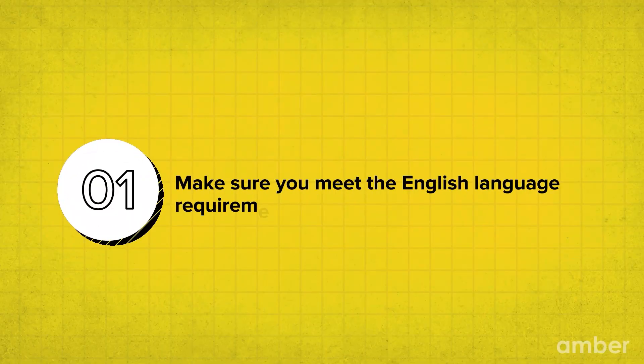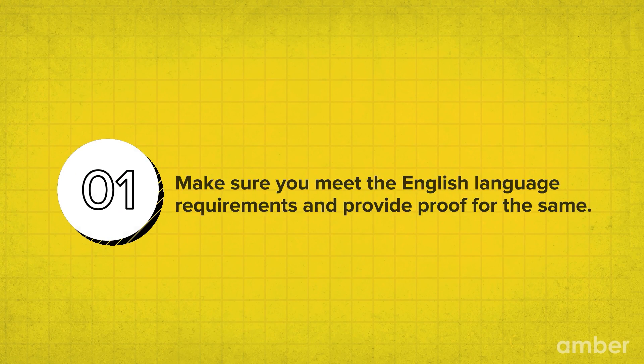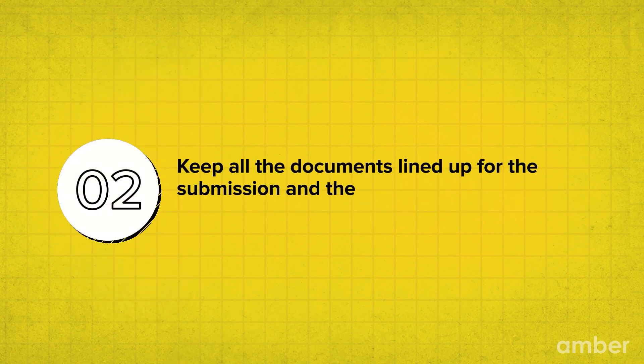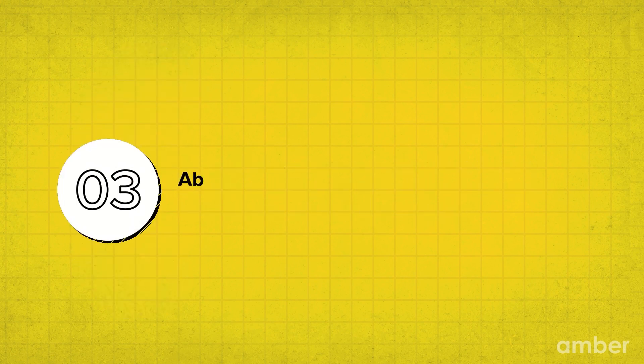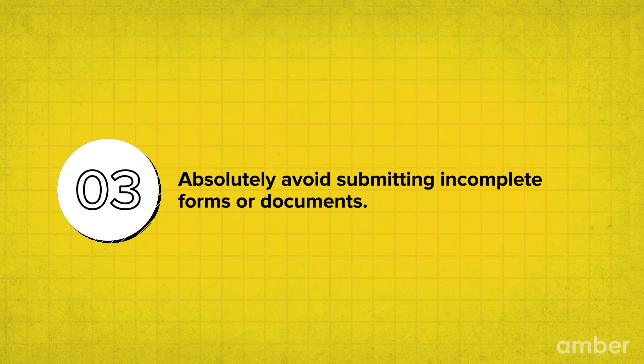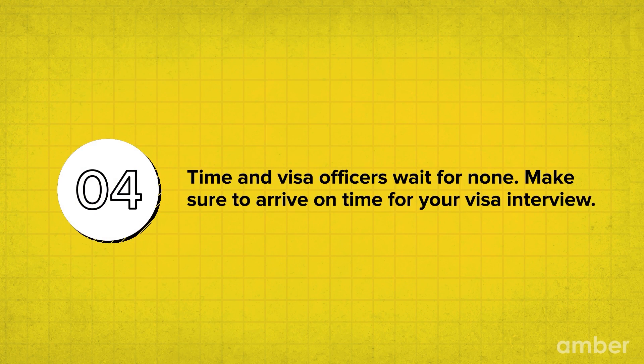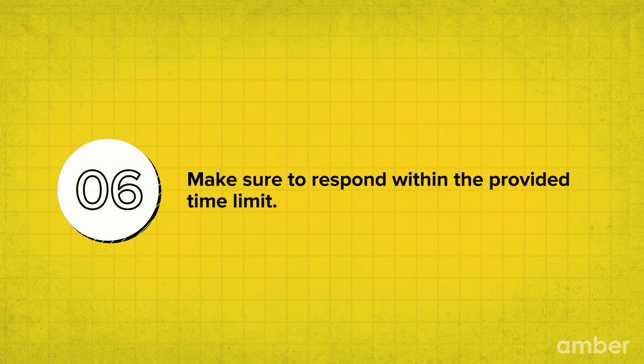We are human and prone to mistakes, so let's look at some common mistakes to avoid when submitting your application. Make sure you meet the English language requirements and provide proof. Keep all your documents organized for submission and the interview, and avoid giving unnecessary documents. Absolutely avoid submitting incomplete forms or documents. Make sure you arrive on time for your visa interview, do not hire a non-registered agent, and make sure to respond within the provided time period.